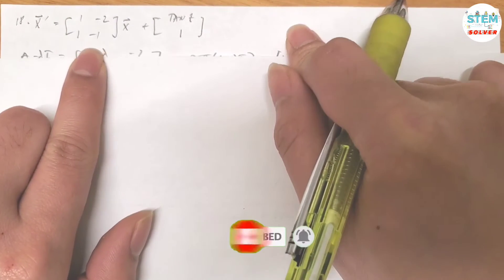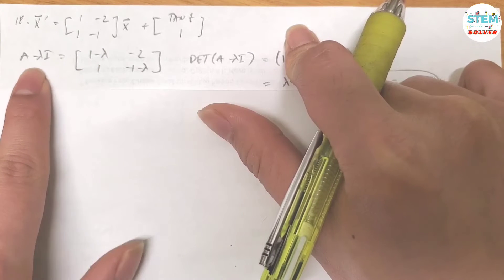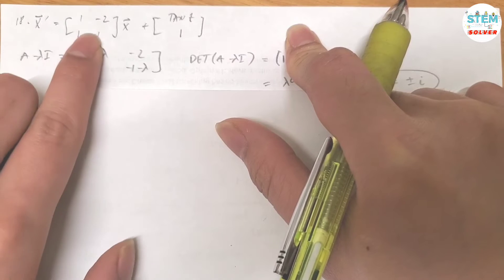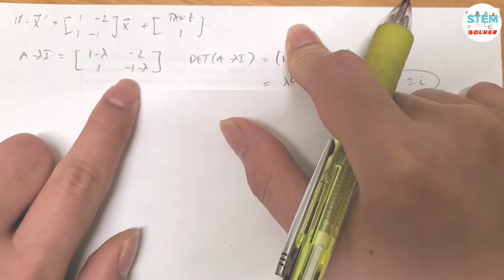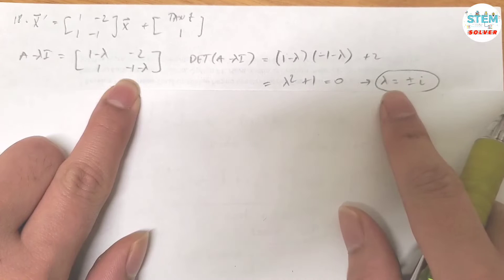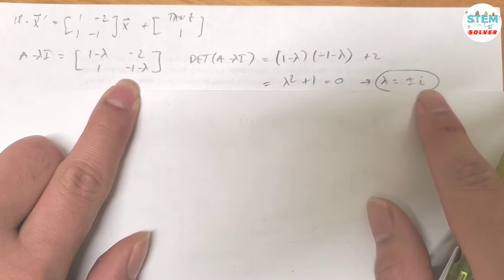Okay, so here's the problem. Same as usual, first thing first is to find A minus lambda I. Let's call this matrix A subtracted with lambda I. It gives you this matrix. And then find its determinant, set it equal to 0. So for lambda, you will get lambda equals positive negative i.